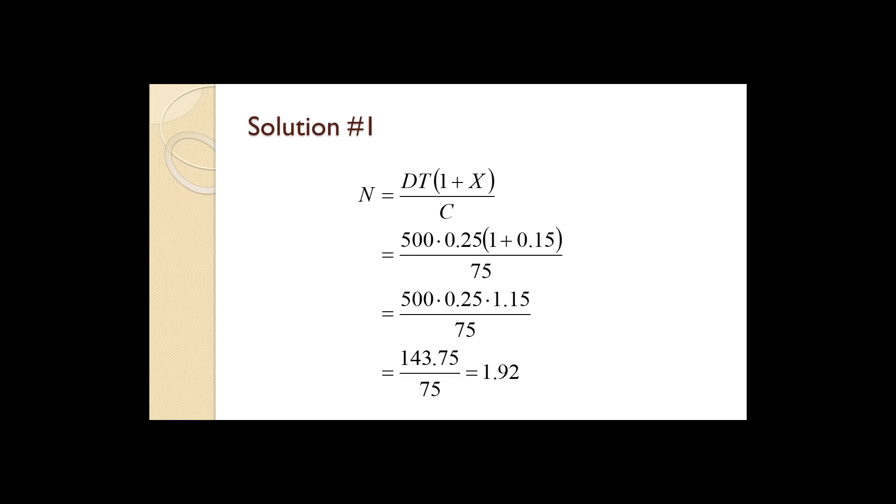The number of containers required equals 500 times 0.25 times the quantity 1 plus 0.15 all divided by 75. That all works out to 1.92. Rounding this up to 2 will result in a system that is somewhat looser.